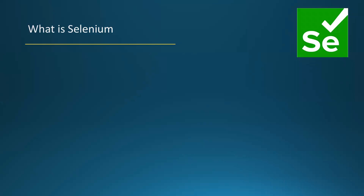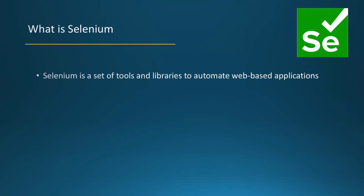What is Selenium? Selenium is a set of tools and libraries used to automate web-based applications. So Selenium is not a single tool — it's a set of libraries which are used to automate web-based applications. A library is a collection of packages and classes, and Selenium is such a library.